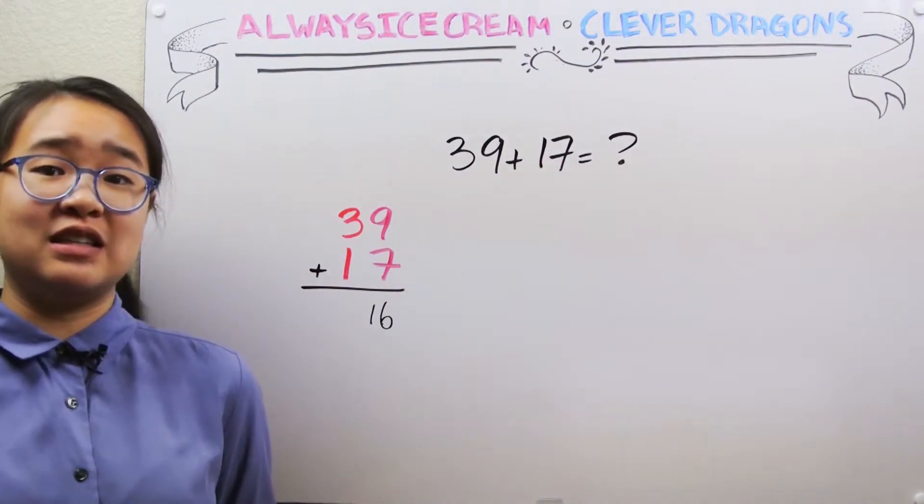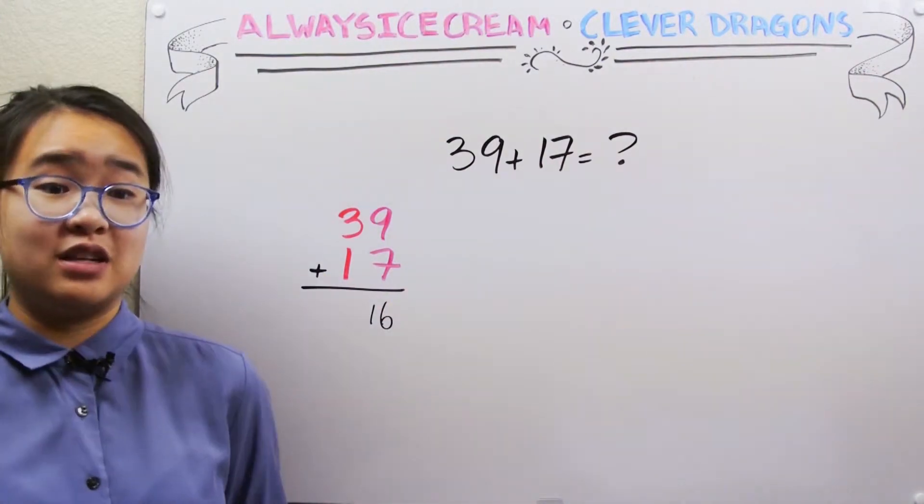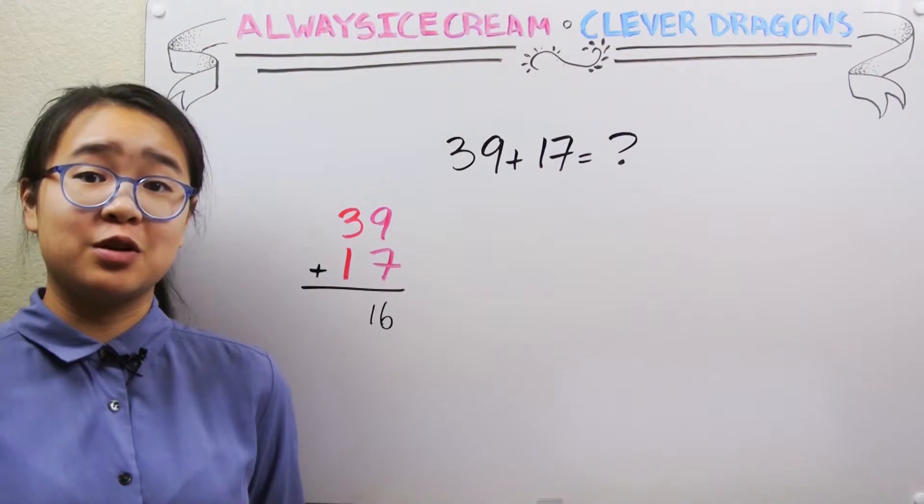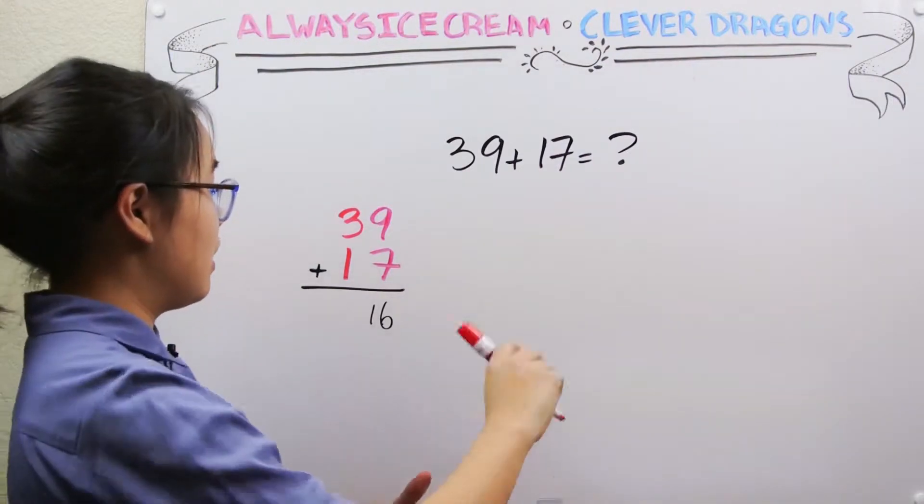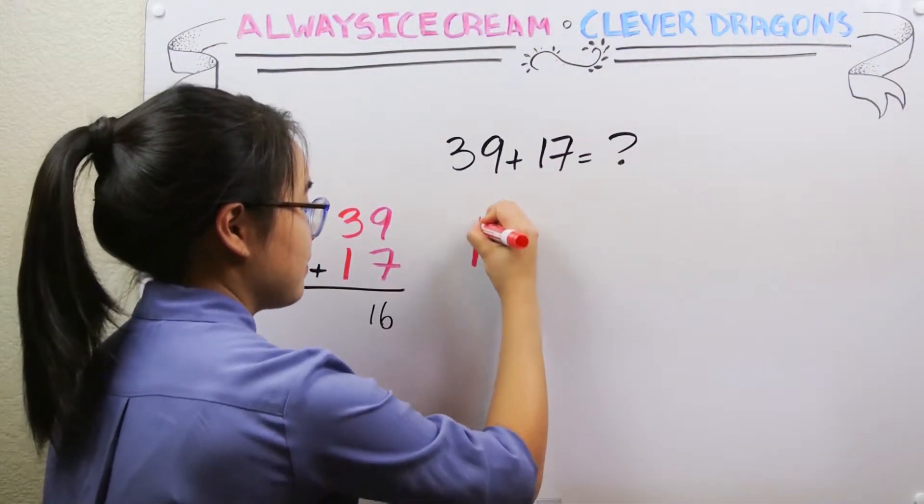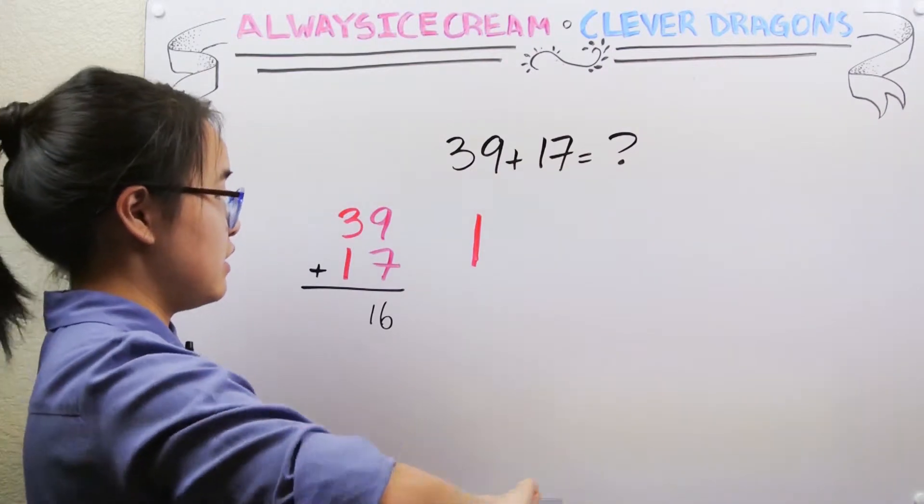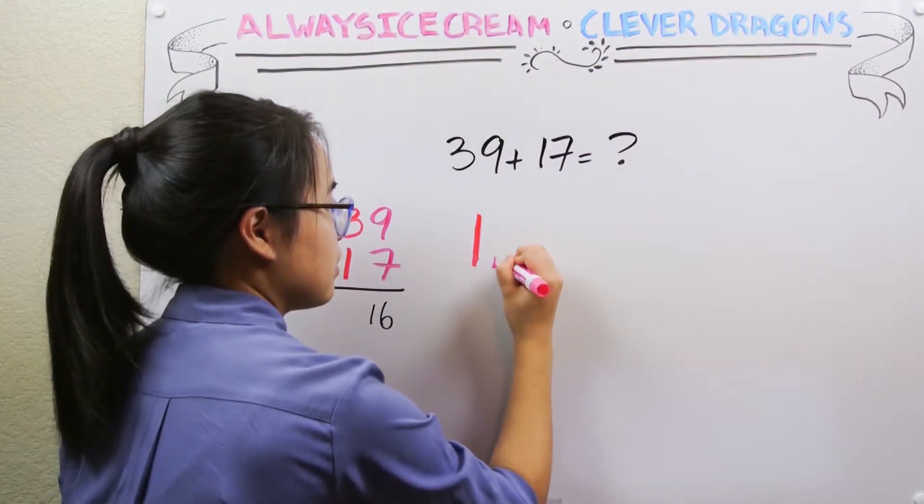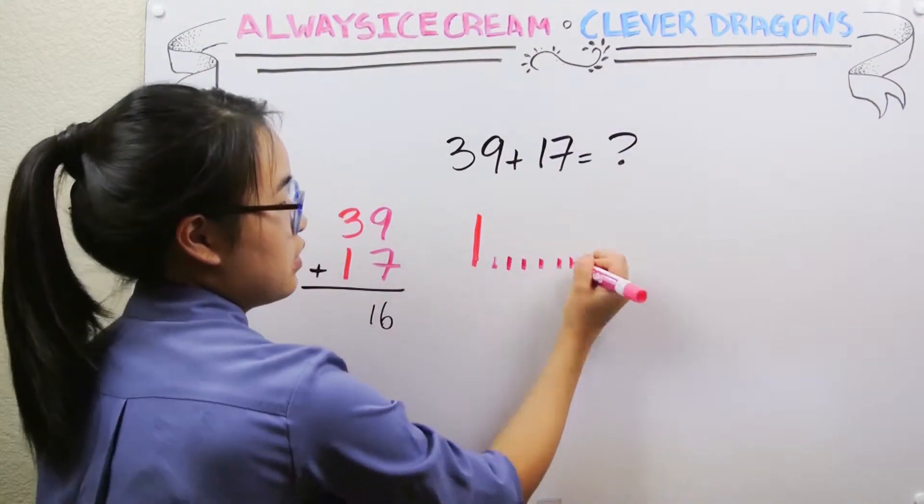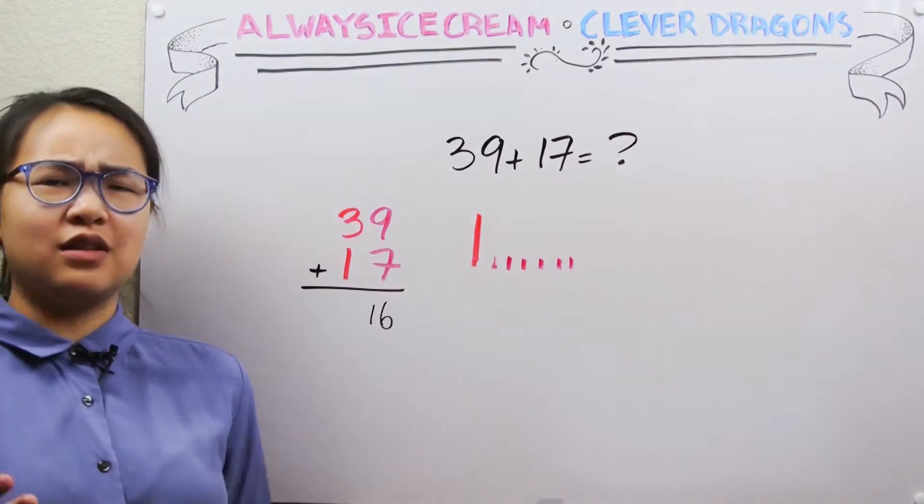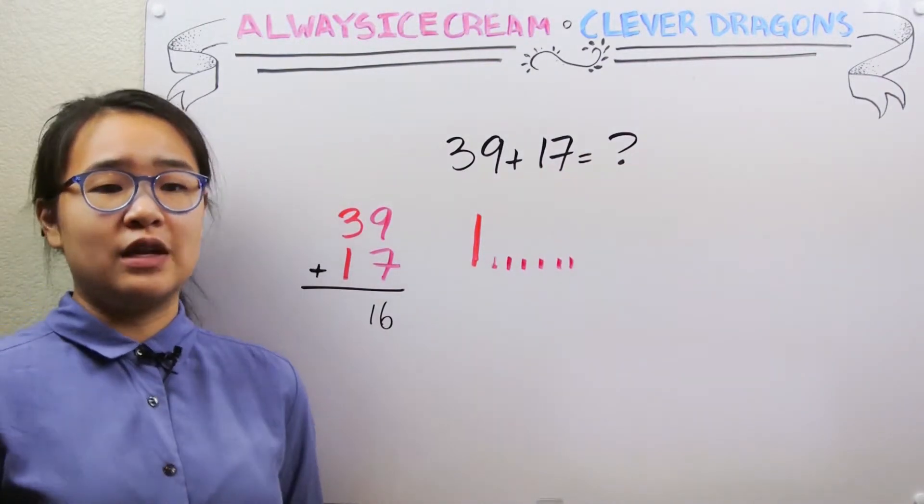Now the problem here with 16 is that 16 is greater than 10. So if we thought about this in terms of rods and units, this would be one rod and six units. So we can't just count these up as only units. Now what?